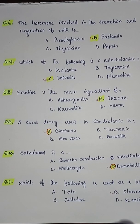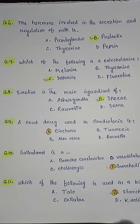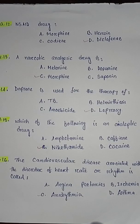Question number eleven: which of the following is used as a binder — option A talc, option B starch, option C cellulose, option D kaolin. So the correct answer is option B starch. Question number twelve: NSAID drug — option A morphine, option B heroin, option C codeine, option D diclofenac. So the correct answer is option D diclofenac.